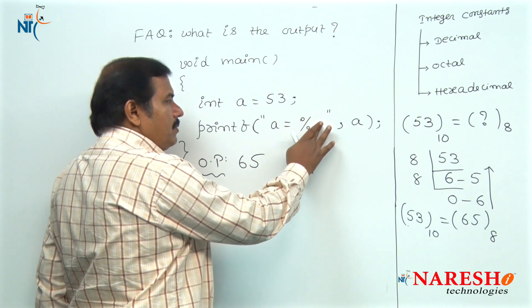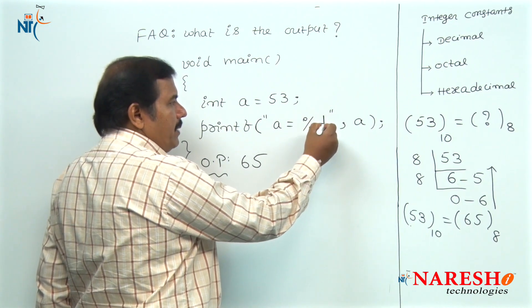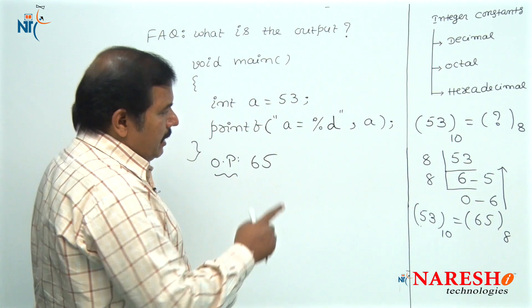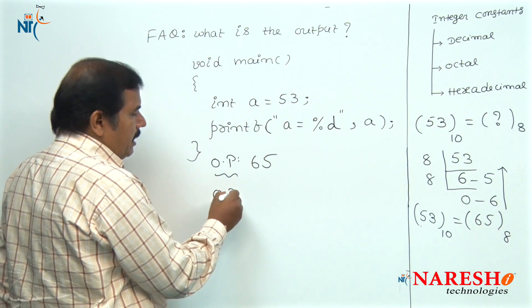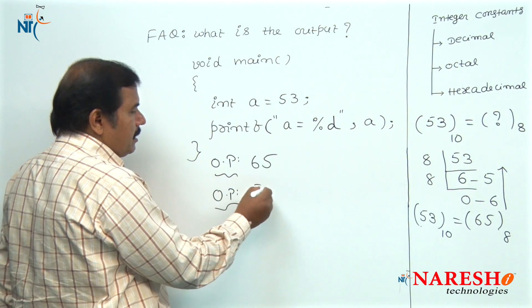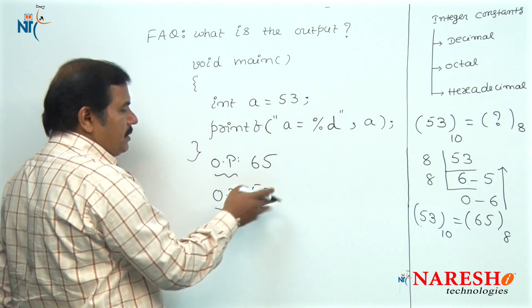Suppose, instead of format code O, if the given format code is D, D stands for decimal integer. At that time, the output you will get is as it is number 53 is printed.